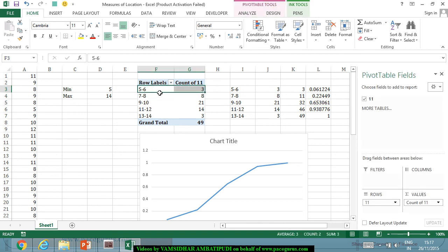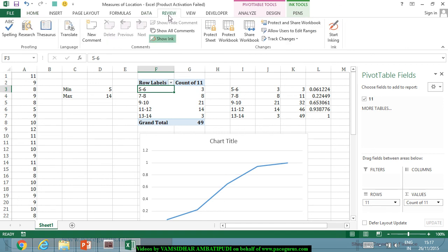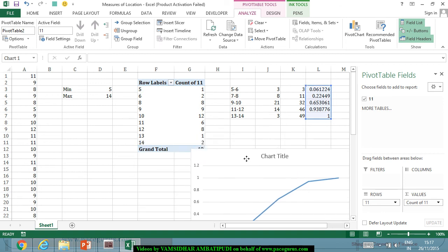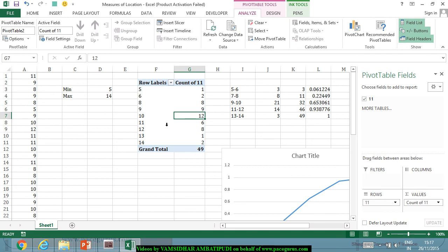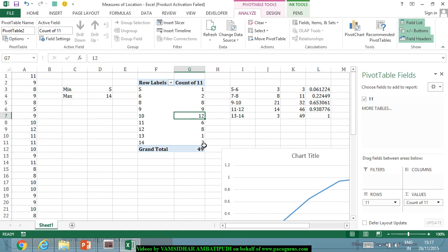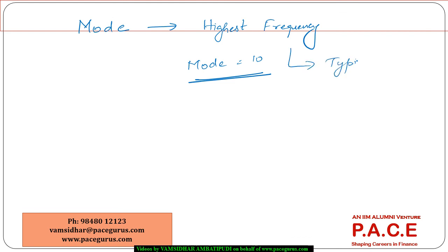The other measure of central tendency is the mode, which is that particular observation appearing with the highest frequency — also called the most typical or most general value. In this example, if I look at individual values without grouping in the pivot table, the group with the maximum count is 10. So the mode of this data is 10. Practically, there are very few applications of mode, but mean and median are the two important measures of central tendency we observe in data.